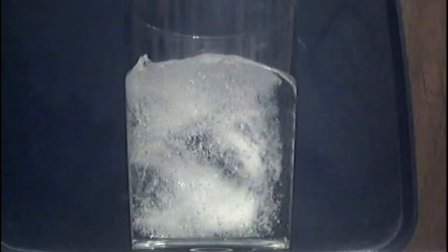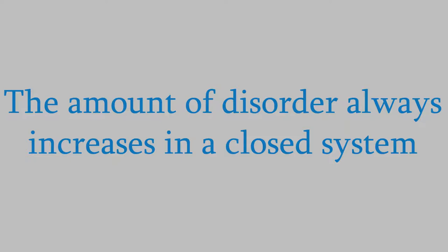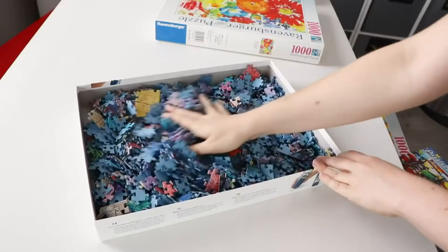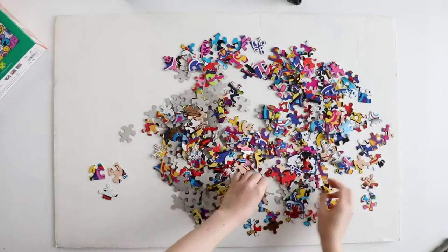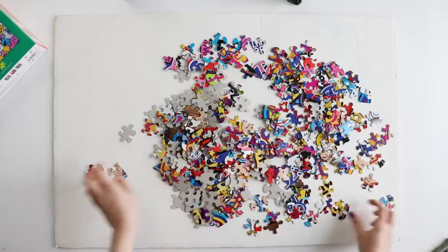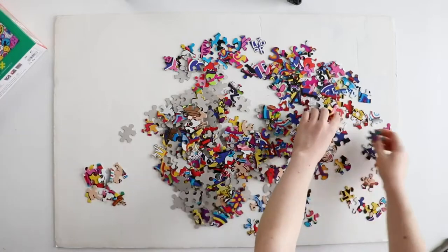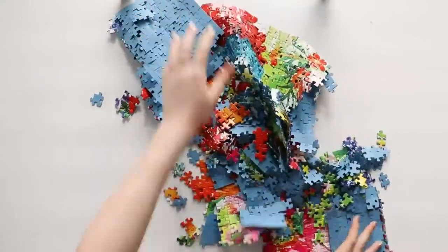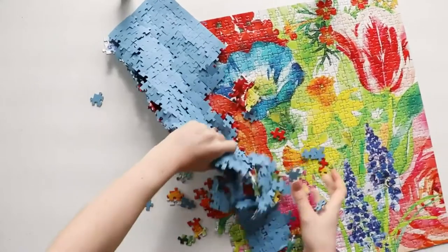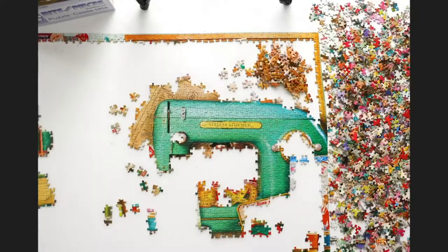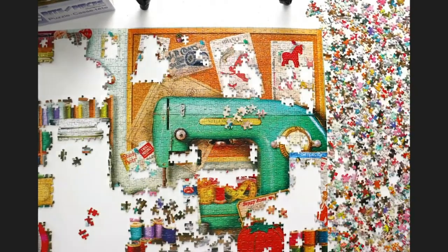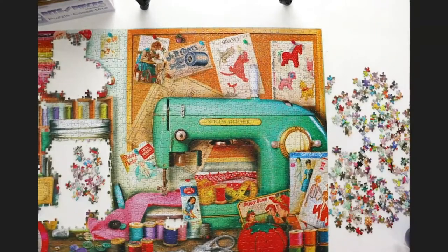So what the second law is telling us is that the disorder or randomness of a closed system always increases. For example, when you shake a box containing a jigsaw puzzle, you find that the pieces end up in a random order, which means it has a high entropy. What you don't expect is to open the box and find that the pieces just happened to fall together in just the right way to make the final picture. That would be a very non-random, low-entropy outcome — partly because there are millions of different ways for the pieces to mix together, but only one would actually result in the finished picture, and that would almost never happen.